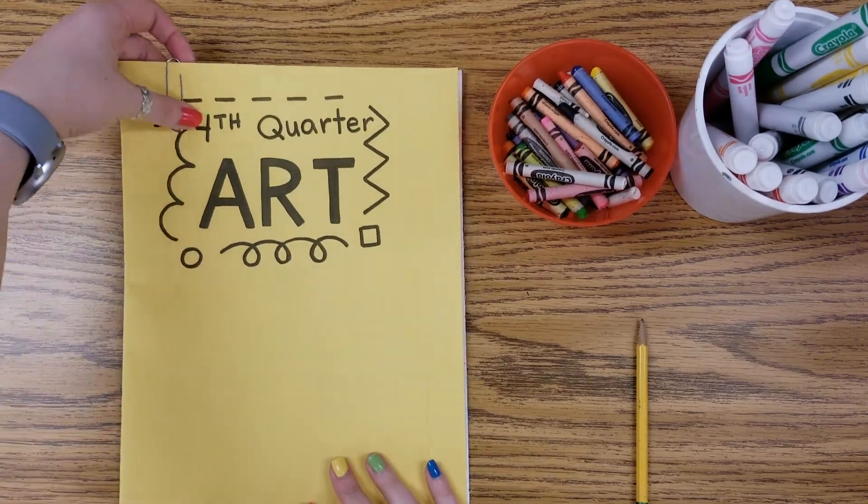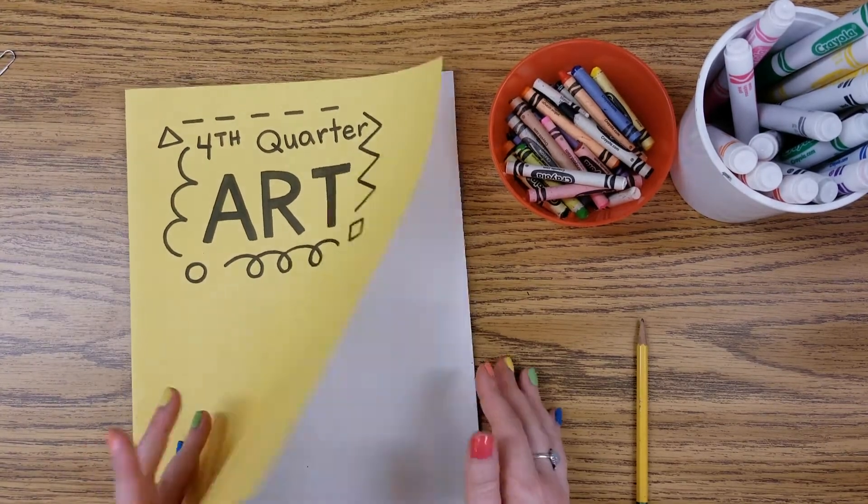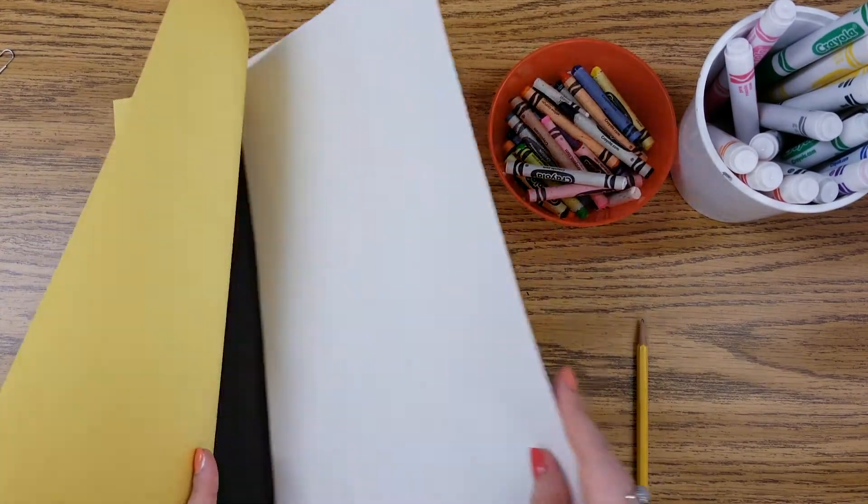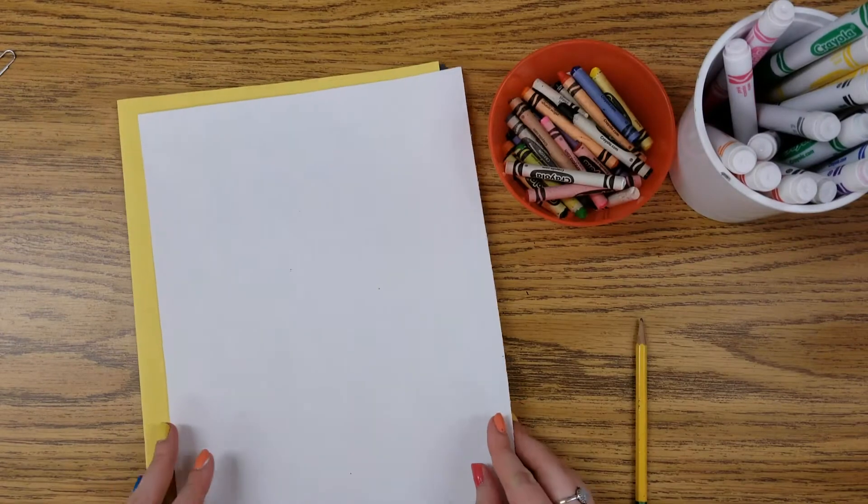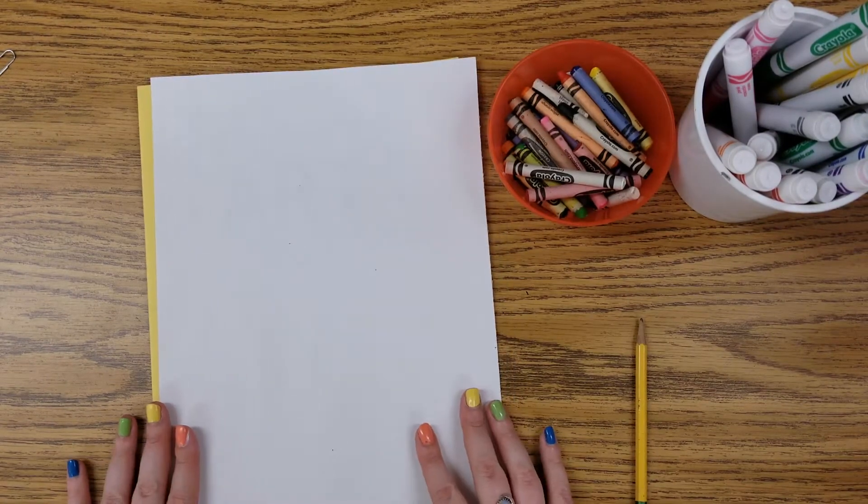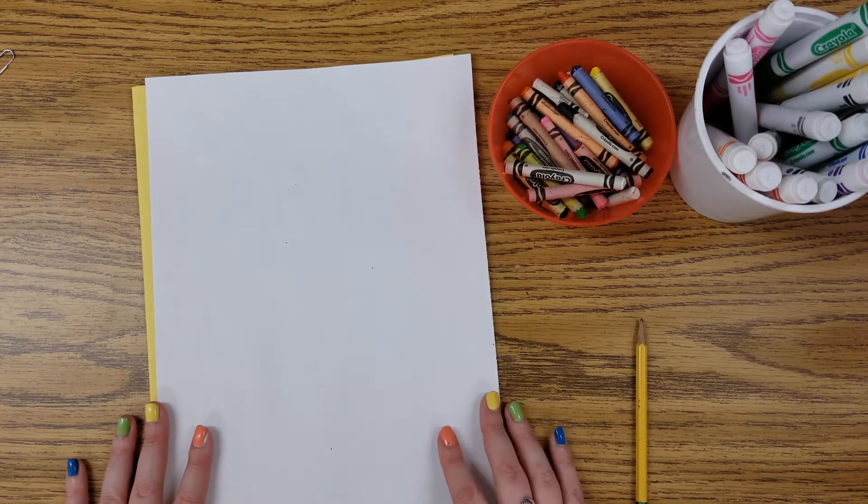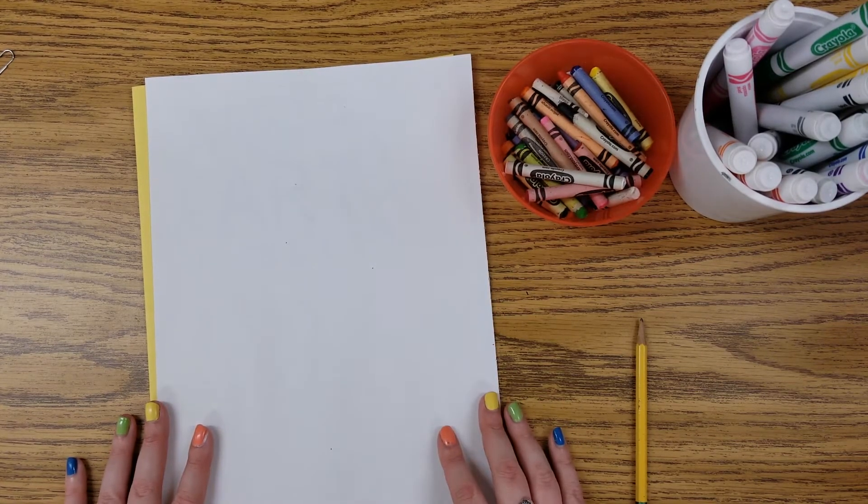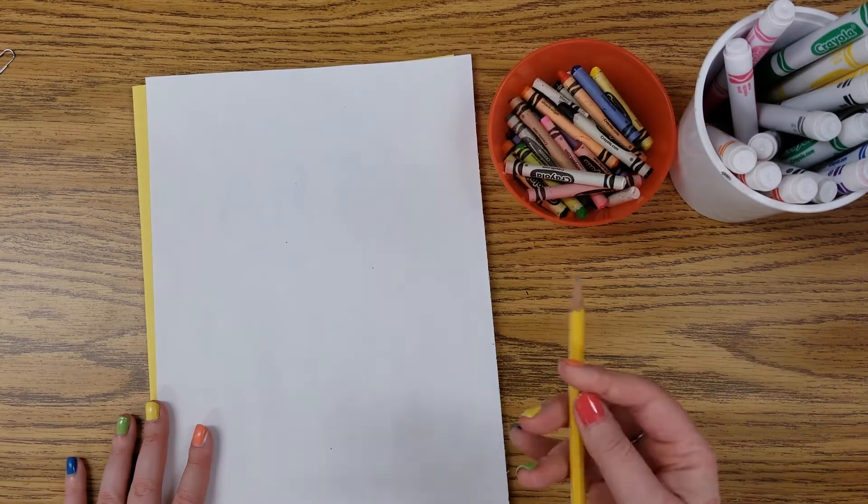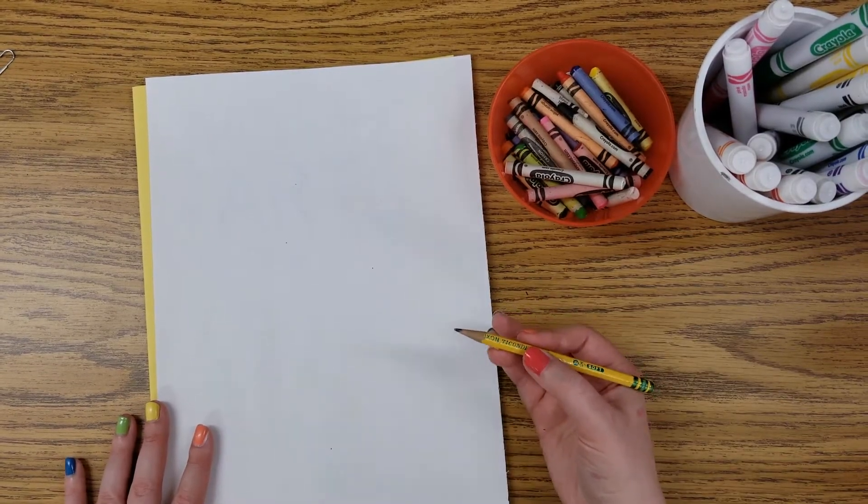In our art folder today, friends, we only need one white piece of paper. This is where we're going to draw our rocket and our planets. We're going to save our black paper for our stars in space for next week. So using my pencil first, it's time to draw a rocket ship together.